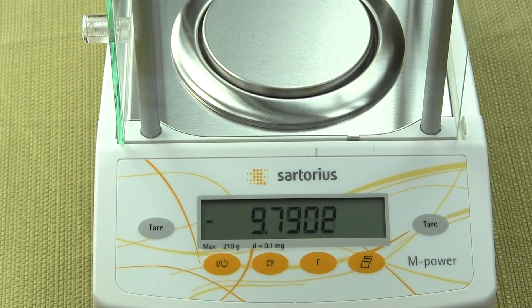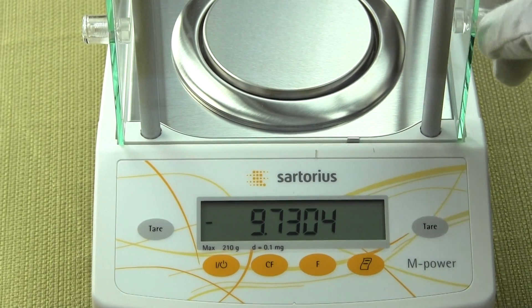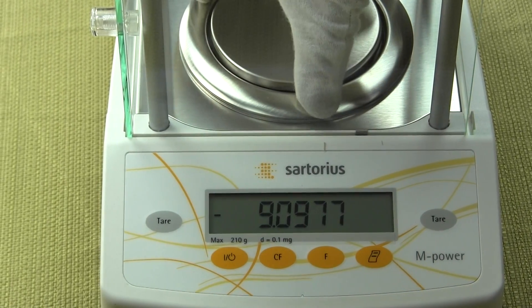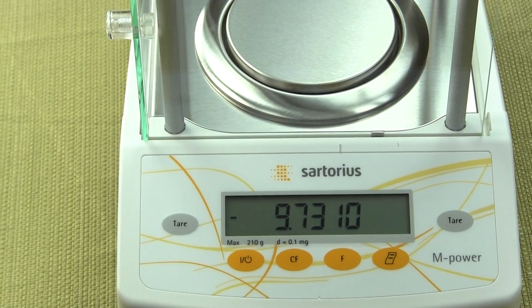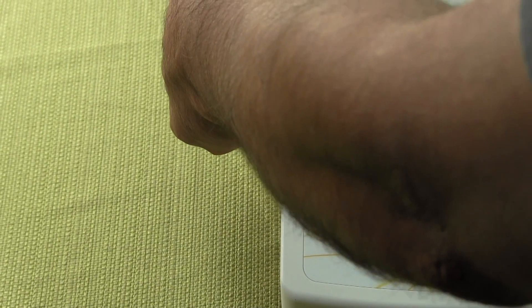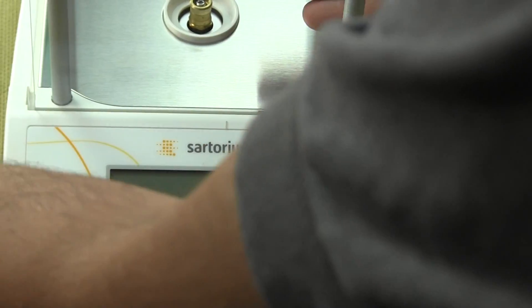Let's go over a few more of the attributes of this analytical balance. The balance has a weigh pan. This weigh pan measures three and a half inches in diameter.